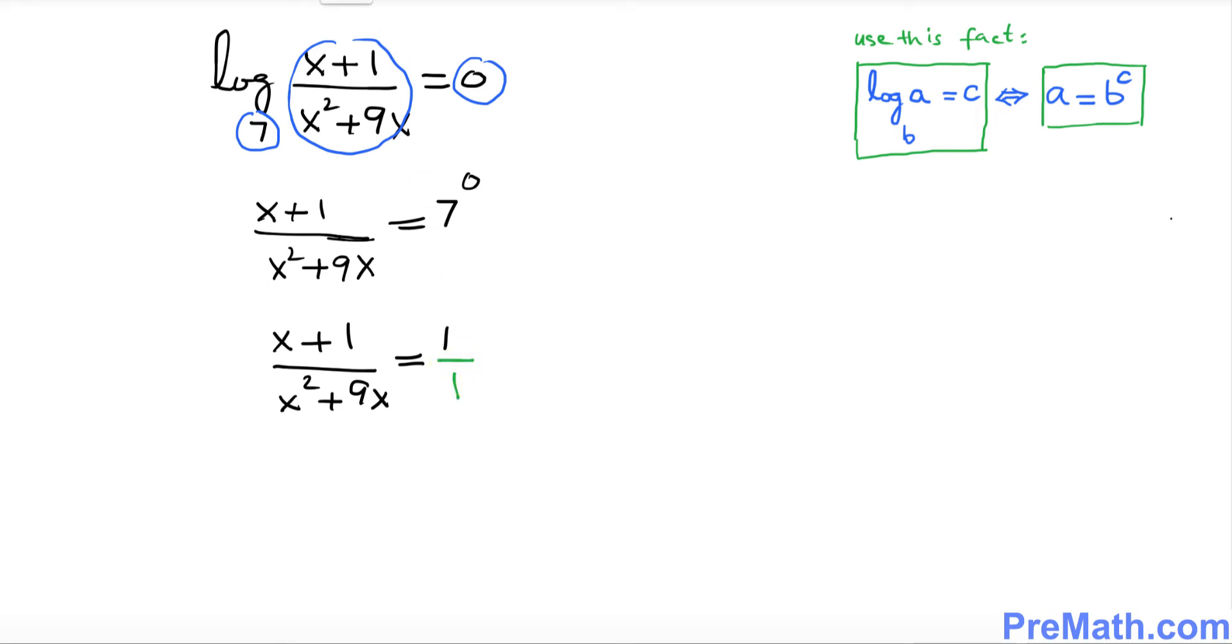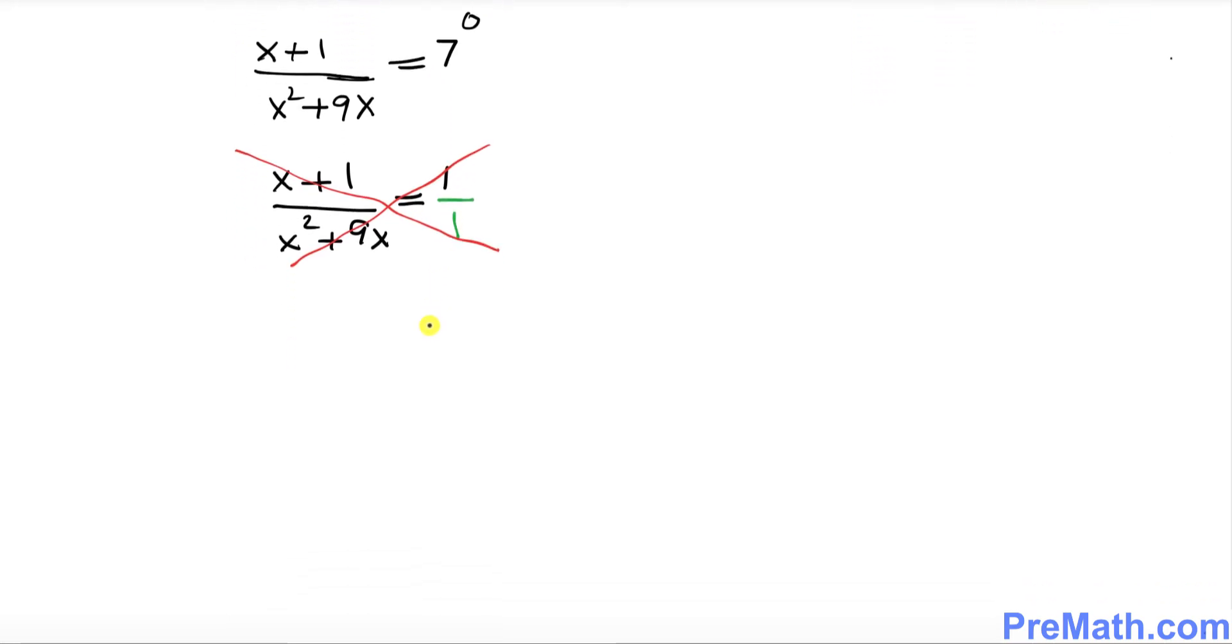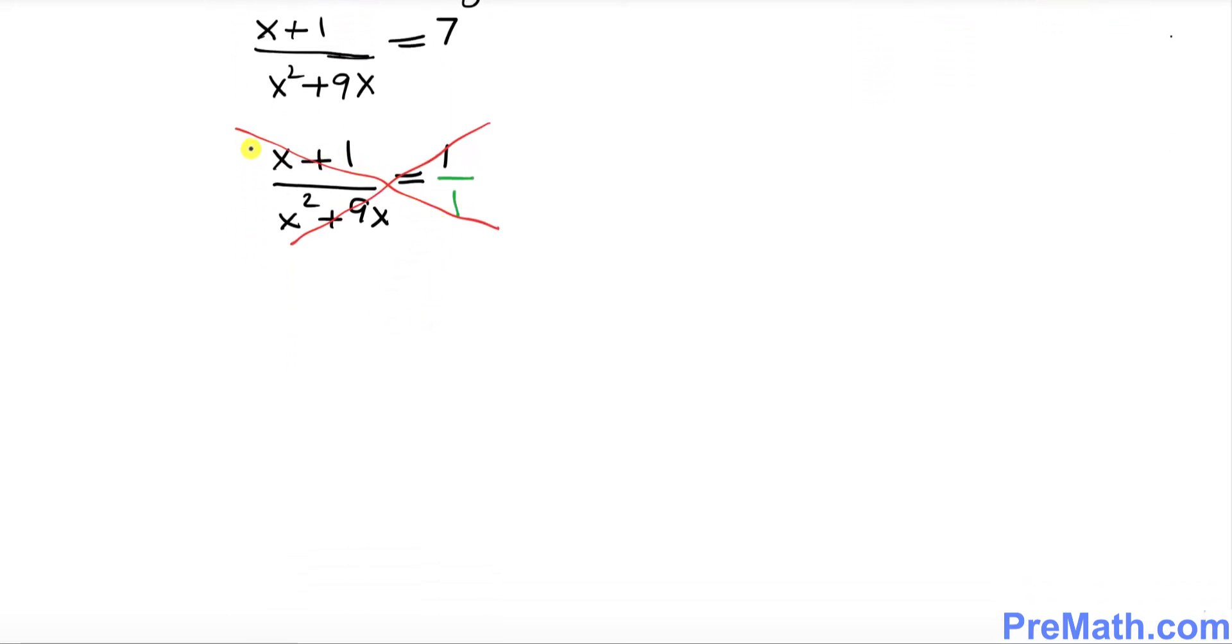Now I'm going to cross multiply to get rid of the fraction. If you cross multiply this way, one times (x+1) is going to be x+1, and if you go the other way around, one times (x² + 9x) is going to give you x² + 9x.